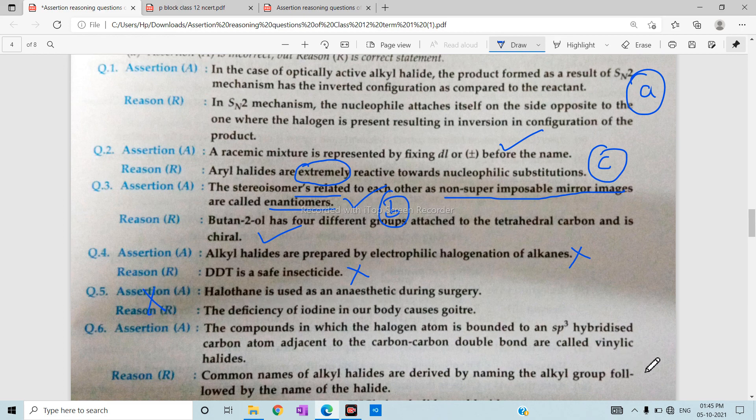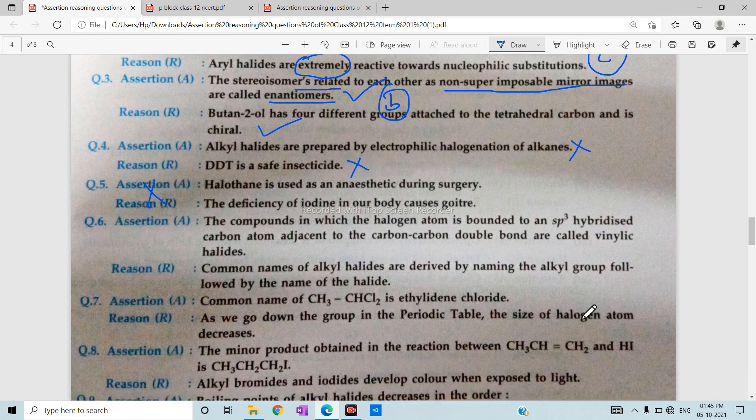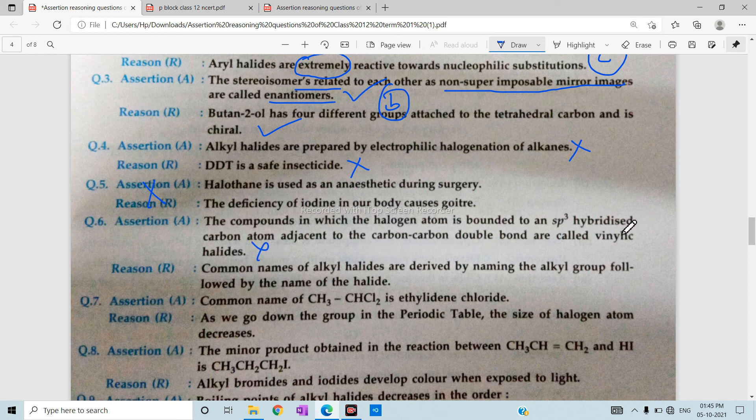After that, we will talk about the compounds in which halogen atom is bound to the sp3 hybridized carbon atom are called vinyl. That's wrong. It's called alkyl, not vinyl or allylic. It's called alkyl.